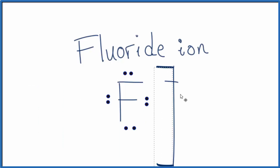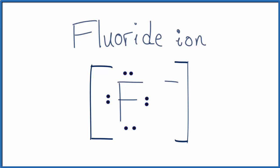To make this complete, we should put brackets around the fluoride ion. And we're done. That's the Lewis structure for F minus, the fluoride ion. This is Dr. B. And thanks for watching.